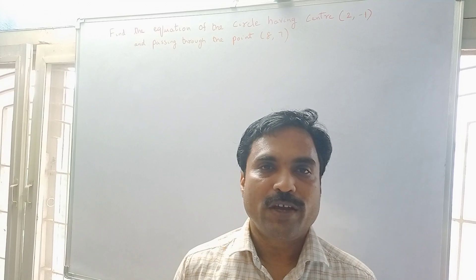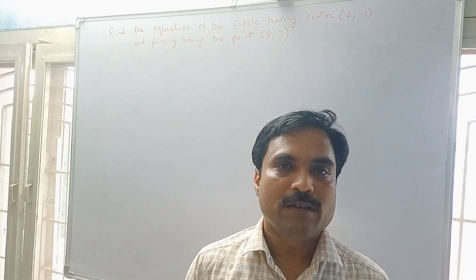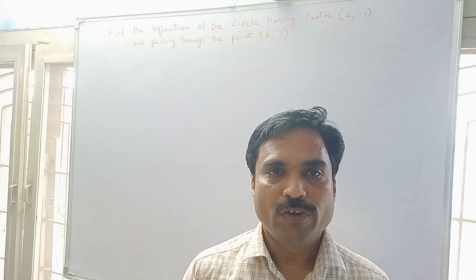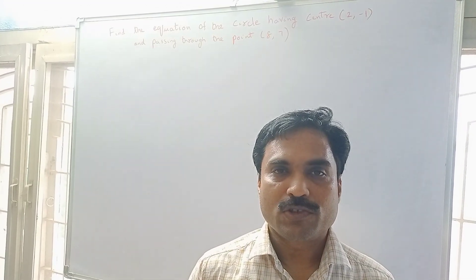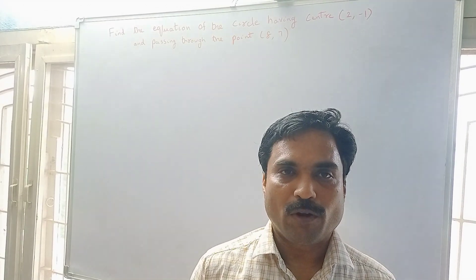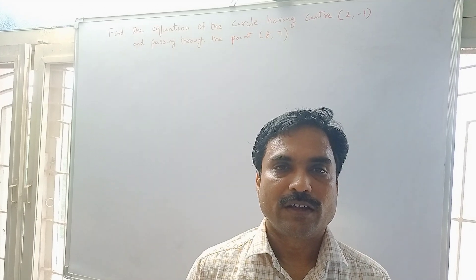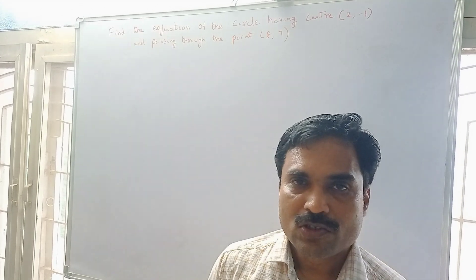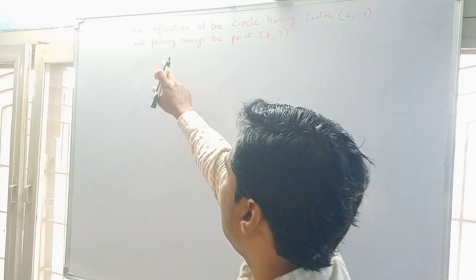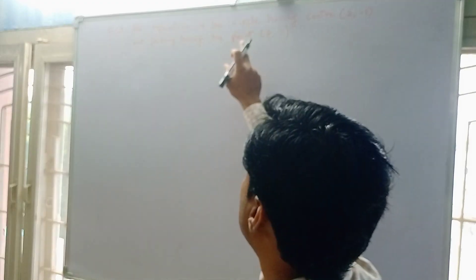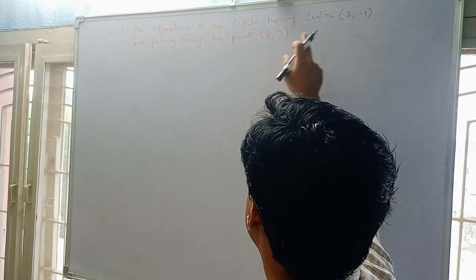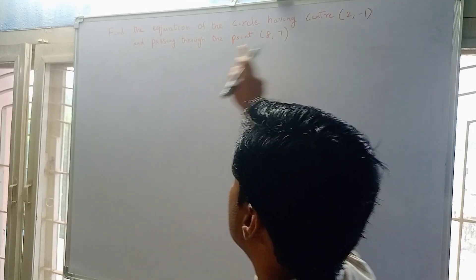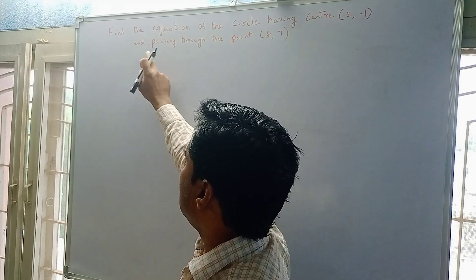Hi, welcome to my channel Yanam Takshasila. In this new video I am going to solve a mathematical problem under analytical geometry. The problem is: find the equation of the circle having center at (2, -1) and passing through the point (8, 7).